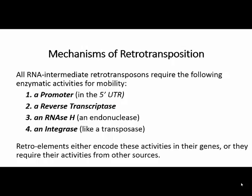All autonomous retrotransposons share the following features. They have a promoter in the 5' UTR from which they can be transcribed. They all require the activity of a reverse transcriptase that will generate a cDNA copy of the transposable element. They require the activity of an RNase H, an endonuclease that degrades the transcript after reverse transcription. And they require the activity of an integrase, an enzyme similar to a transposase that catalyzes the insertion of the retrotransposon copy at insertion sites. Non-autonomous retroelements, or retroposons, lack these genes but get their protein products from the activity of an autonomous retrotransposon.